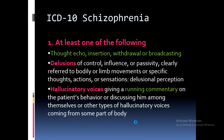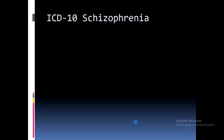Thought broadcasting means whenever the person thinks about anything, other people come to know about it. Delusions of control, influence, or passivity clearly refer to bodily movements or specific thoughts, actions, or sensations. Delusional perception means the perception itself is normal — for example, if someone sees a crown on a spoon, the perception is normal, but they give it a delusional meaning, believing they belong to the royal family. The perception is normal but its significance is delusional. Hallucinatory voices giving a running commentary on the patient's behavior or discussing the patient among themselves are other types of hallucinations, sometimes coming from some part of the body.